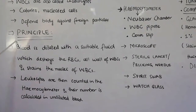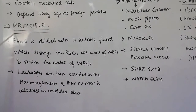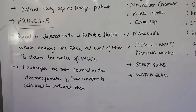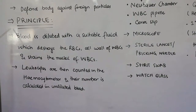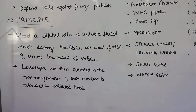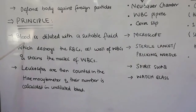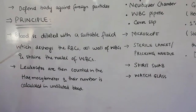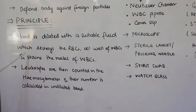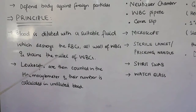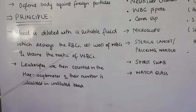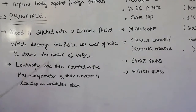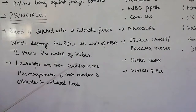The principle of this practical — the determination of WBC count by Neubauer chamber — is that the blood is first diluted with a suitable fluid which destroys the RBCs and the cell wall of WBCs, and stains the nuclei of WBCs.